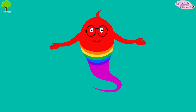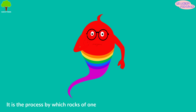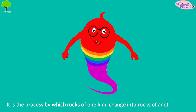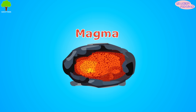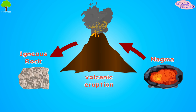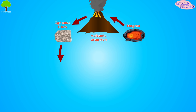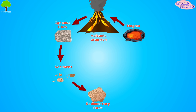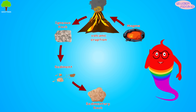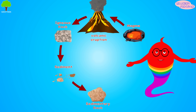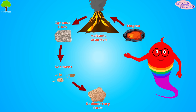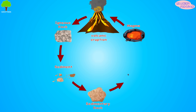Now the rock cycle. It is the process by which rocks of one kind change into rocks of another kind. Magma is sent to the Earth's surface; it cools and forms an igneous rock. Next, this rock breaks into small pieces of sediment. As sediment builds up and hardens over the years, a sedimentary rock is formed. Slowly, this sedimentary rock goes deep into the Earth's crust. When the heat and pressure get high, the sedimentary rock will metamorphose into a metamorphic rock, and the cycle will start all over again.